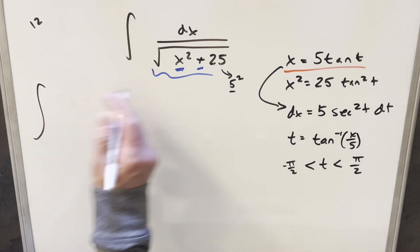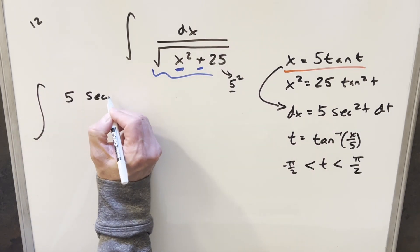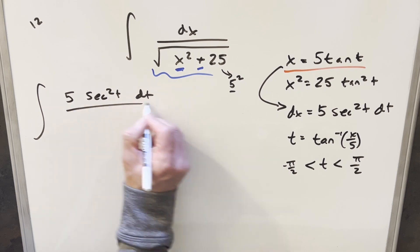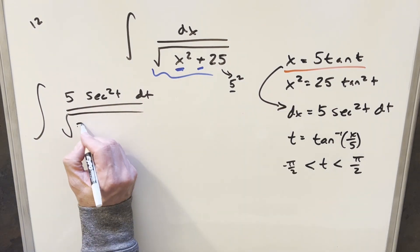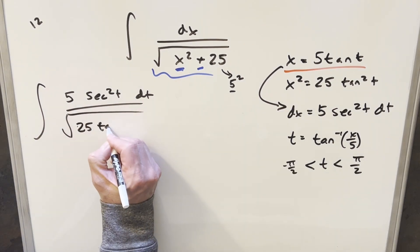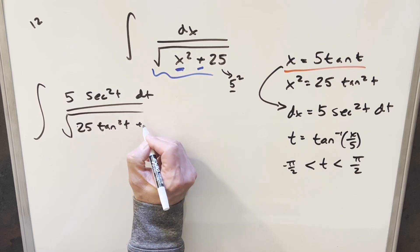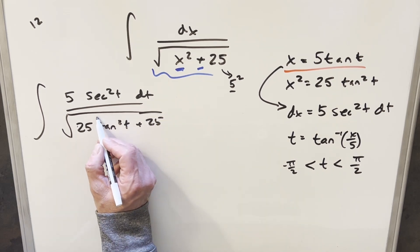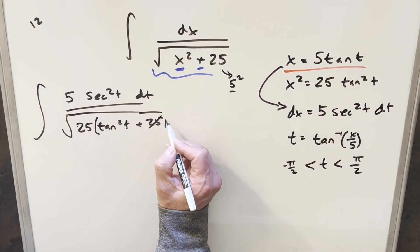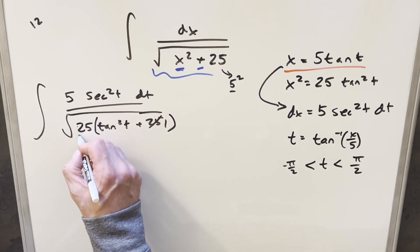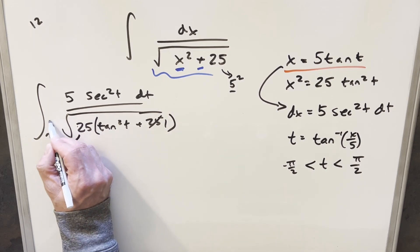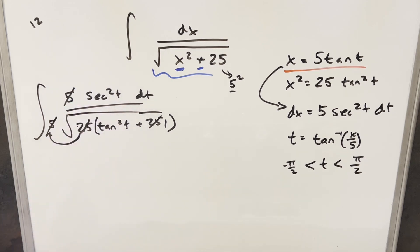So now coming over here for our dx value, we have 5 secant squared t dt in the numerator. So for x squared, we'll have this. We're going to have 25 tan squared t plus 25. But then if I just factor a 25 out here, this is going to become a 1. When we bring it outside of the radical, this is just going to become a 5 here. But then I can cancel 5 with 5 here.